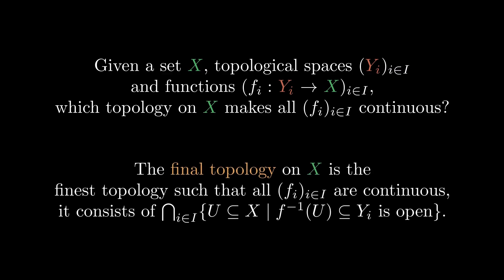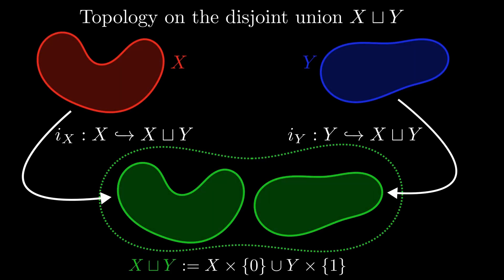Let's look at some examples. First of all, the disjoint union. We are given two topological spaces. Then the topology on the disjoint union is the final topology induced by the two inclusions. Intuitively, the disjoint union space consists of two copies of the spaces x and y, which are disconnected from each other.